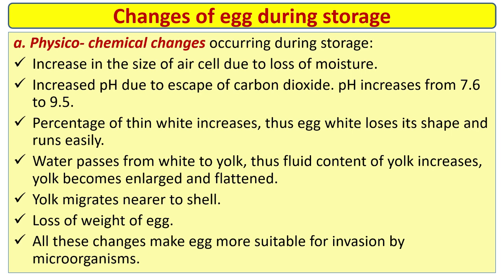Changes of egg during storage — physico-chemical changes: increase in the size of air cell due to loss of moisture; increase in pH due to escape of carbon dioxide — pH increases from 7.6 to 9.5.